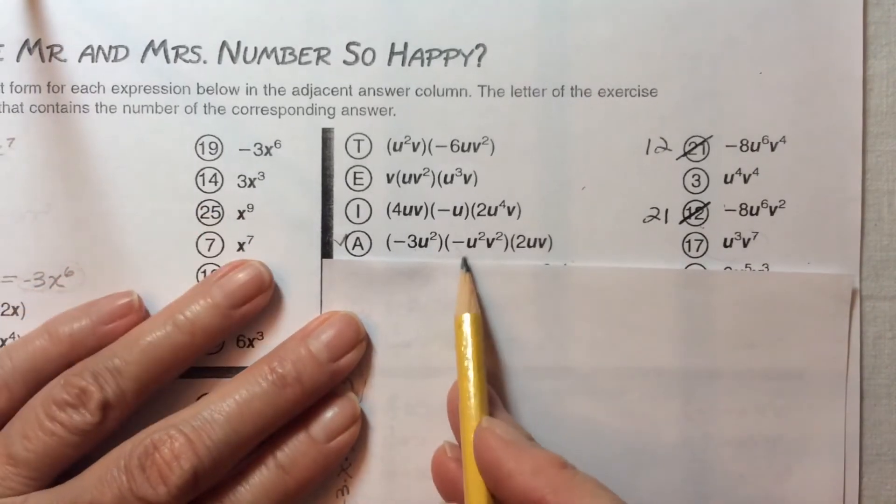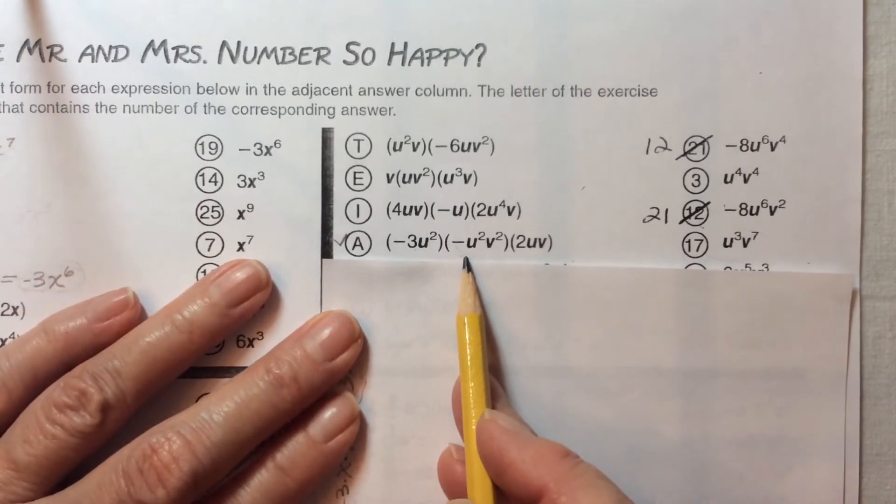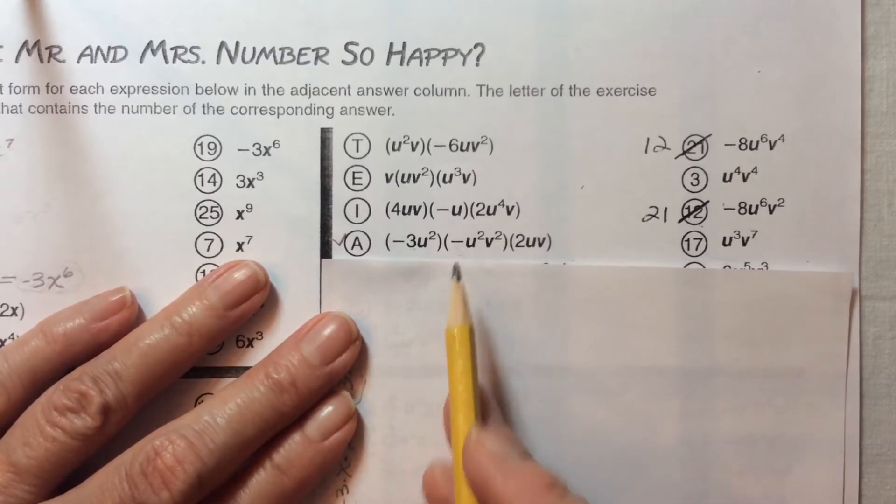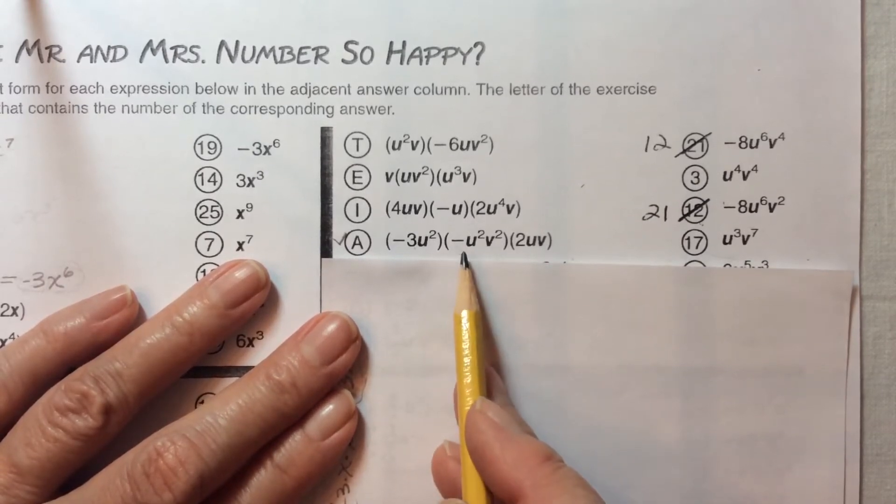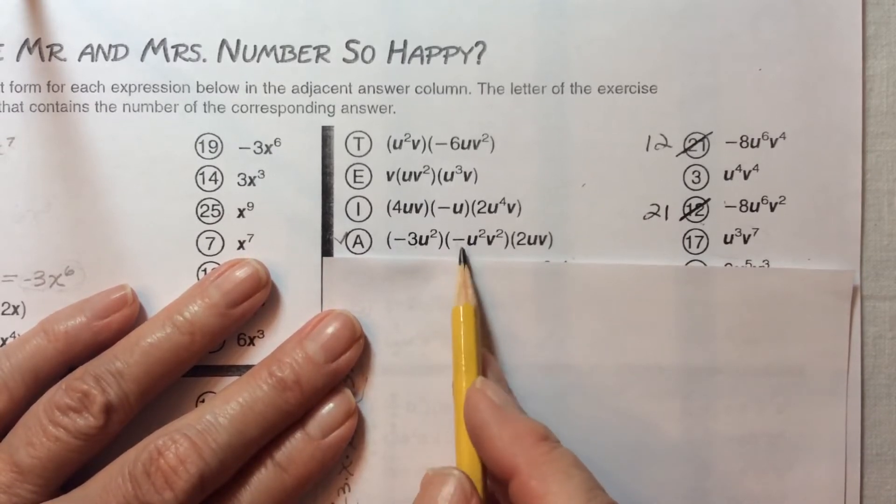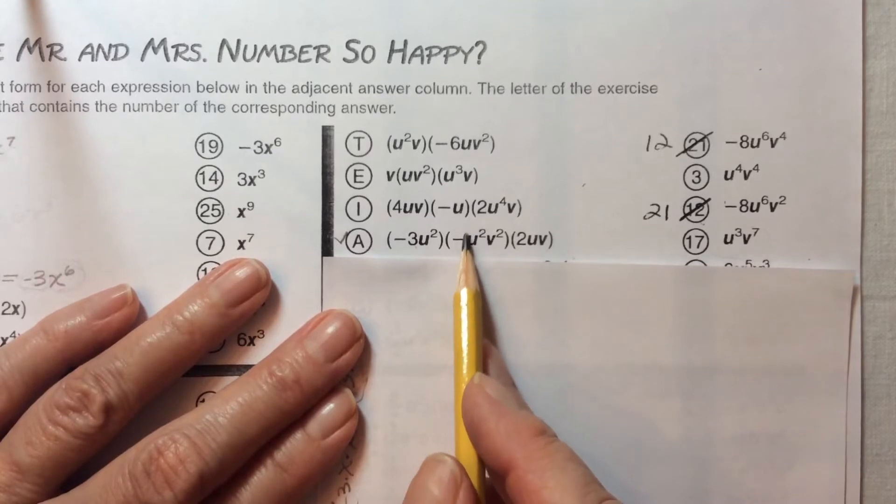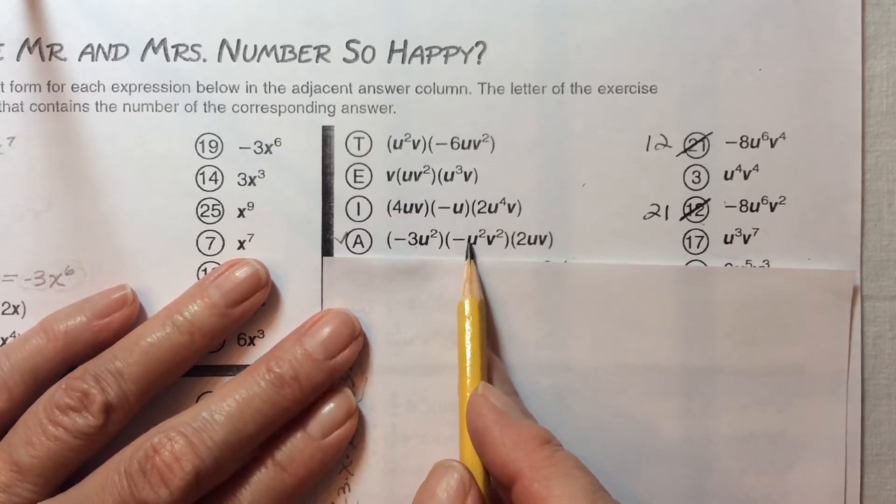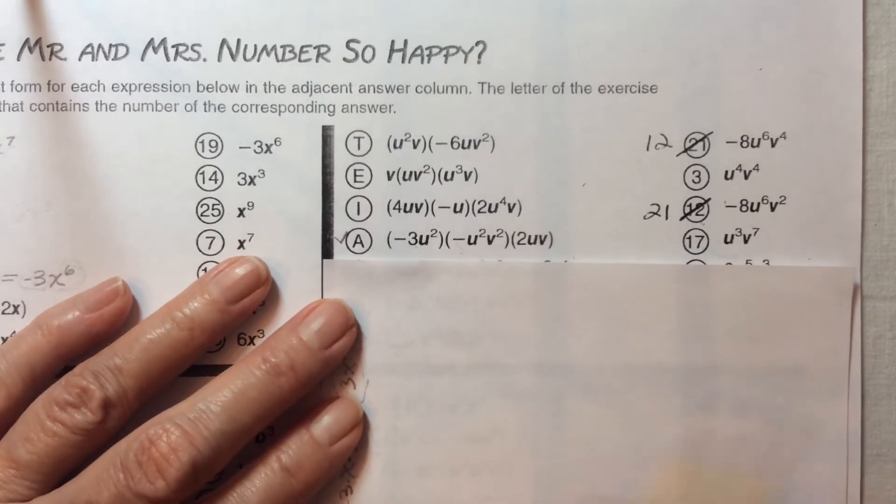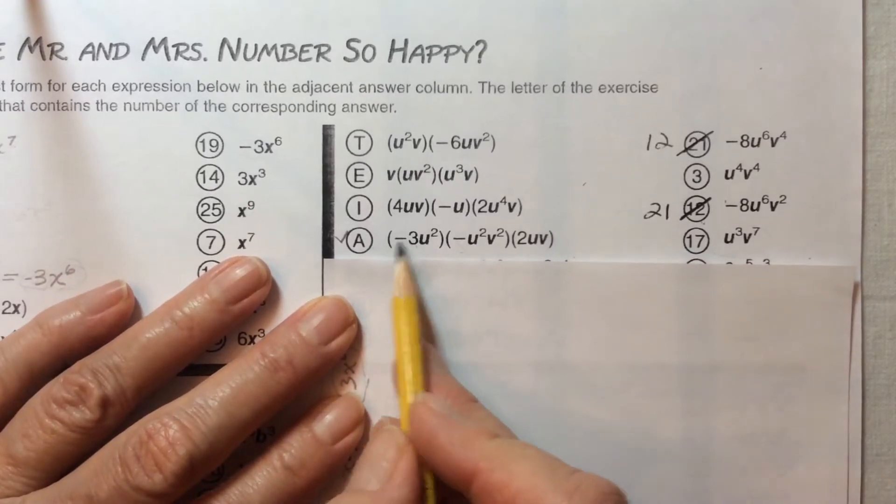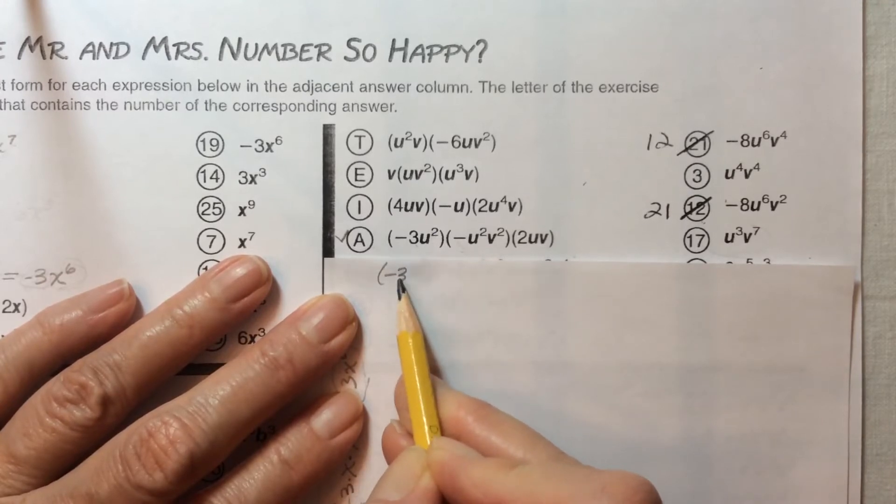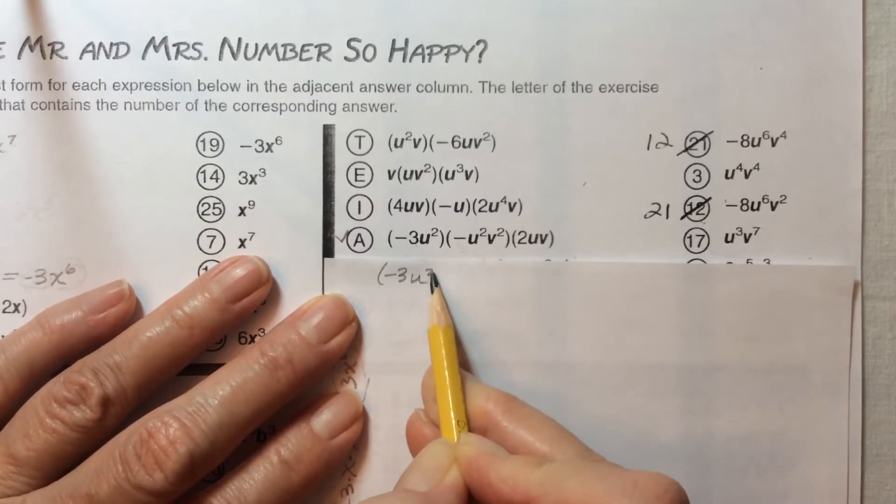Remember that any time a variable doesn't appear to have a coefficient, there really is a coefficient, and that's the invisible one. We're going to take advantage of the invisible one in front of that u and rewrite the problem to make it easier to work. The first term stays the same: negative 3u to the second power.